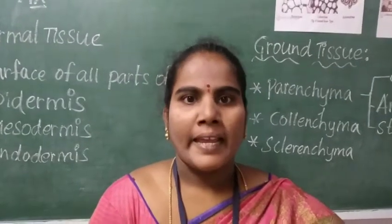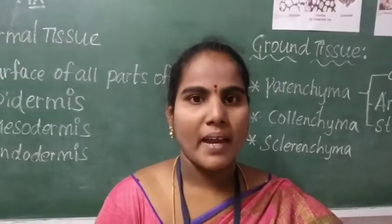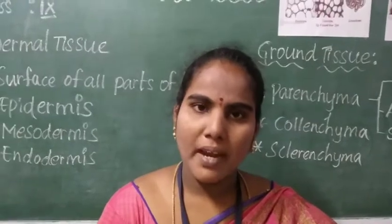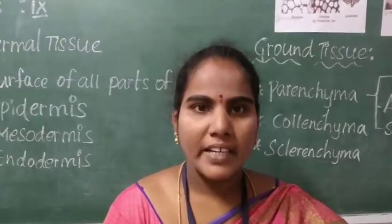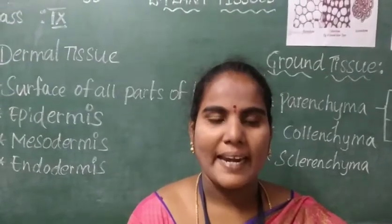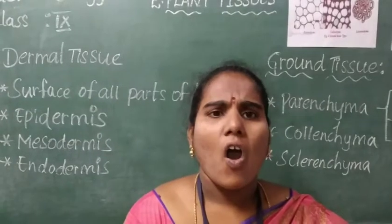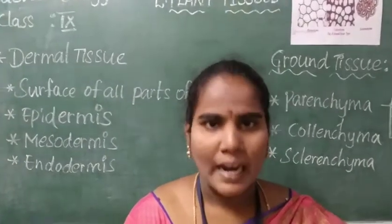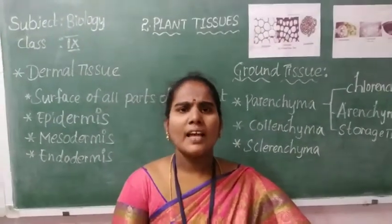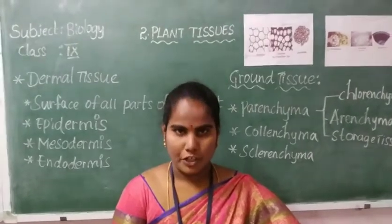Welcome children. In the last class we discussed about meristematic tissue in detail. Meristematic tissue is what gives overall growth and repair to the plant body. All the other three tissues — dermal tissue, ground tissue, and vascular tissue — are derived from the meristematic tissue.